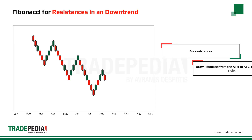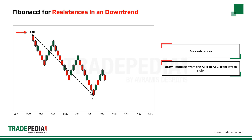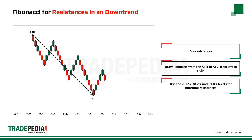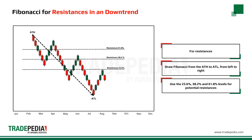In the case of a downtrend, draw Fibonacci from the all-time high to the all-time low, always from left to right. Use the 23.6%, 38.2%, and 61.8% levels for potential resistances.